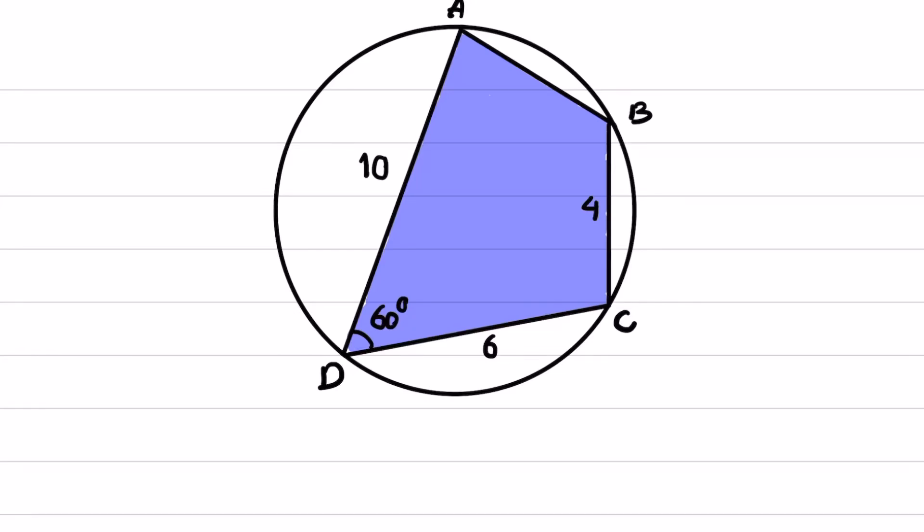Welcome to a new episode of MassDartic. In this question, quadrilateral ABCD is given, and we know that BC is 4, CD is 6, DA is 10, and this angle is 60 degrees. The question asks to find the area of this colored region.